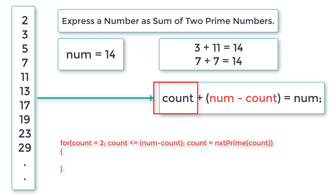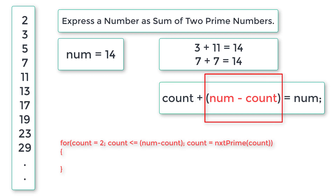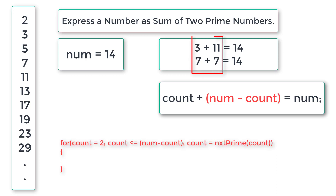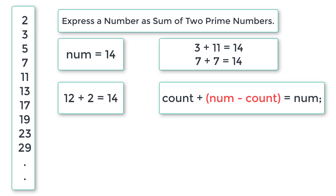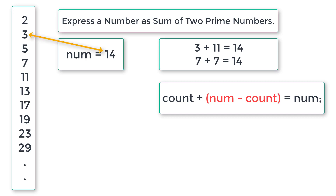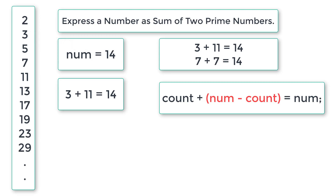Count is already a prime number. Inside the for loop we need to check that num minus count is also a prime number. If both are prime, we print that pair as the result; if not, we go to the next prime. For example, with 14: 14 minus 2 is 12, but 12 is not prime so we skip it. Count increments to 3; 14 minus 3 is 11, and 3 plus 11 equals 14 — both are prime, so we take this as our result.